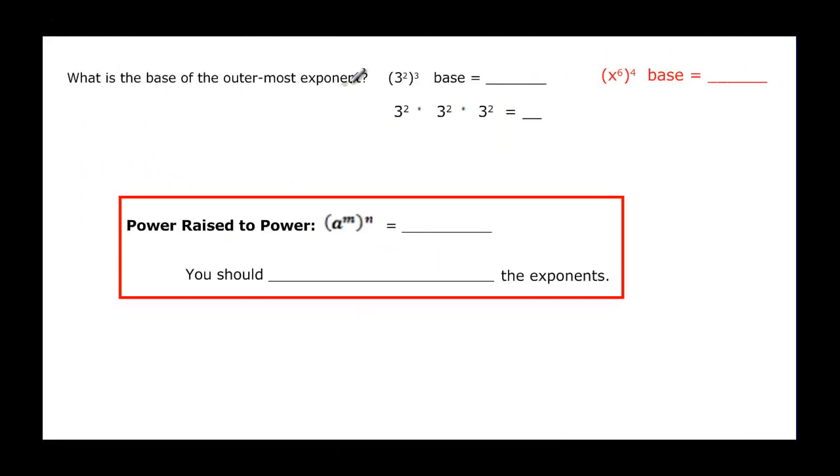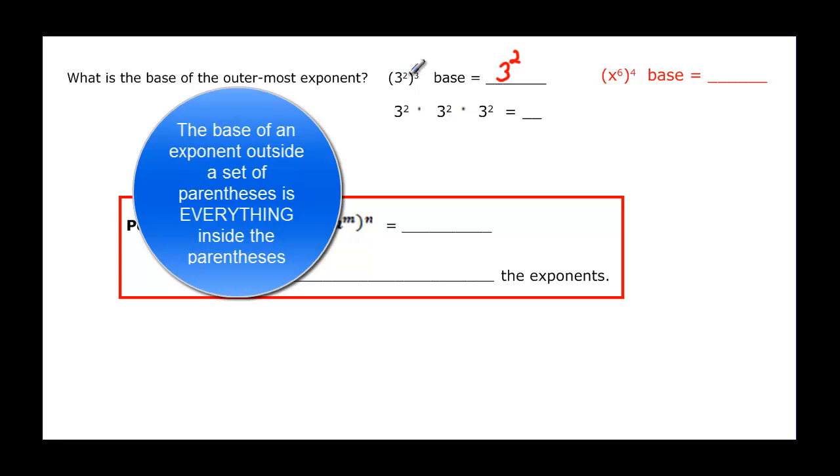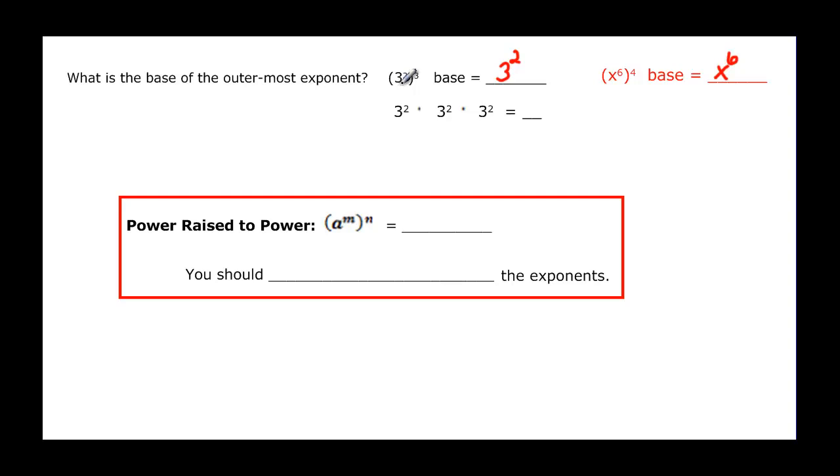Let's look and see what the base is here. Because notice I have more than one exponent going on. But the base for this one is going to be 3 squared. Remember we said that the parentheses, everything inside the parentheses would be directly below an exponent on the outside. So the base here would be x to the sixth. And if I multiply this one out it really means 3 squared times 3 squared times 3 squared. And if we use the property that we just learned, that we have the same base of 3, we can add our exponents. Then this is going to be 3 to the 2, 4, 6.